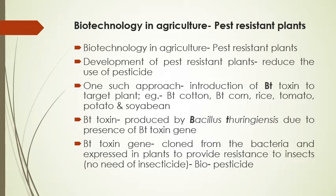What is BT toxin? BT toxin is produced by a bacterium known as Bacillus thuringiensis, and this toxin is produced by the BT toxin gene present in this bacteria. The BT toxin gene is cloned from the bacteria and expressed in the plants, so we can minimize the use of insecticides and pesticides. Till now, BT cotton, BT corn, BT rice, BT tomato, potato, and soybean have been prepared with the help of BT toxin resistant crops.